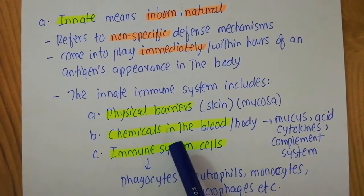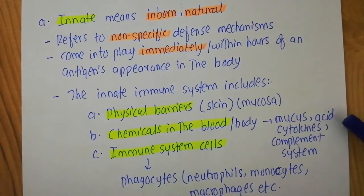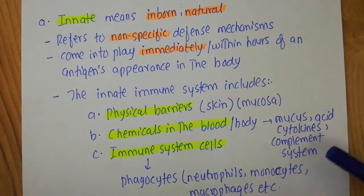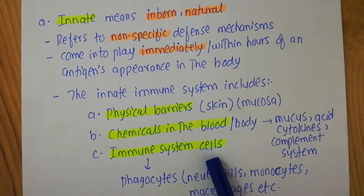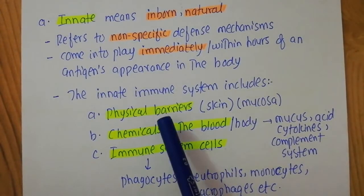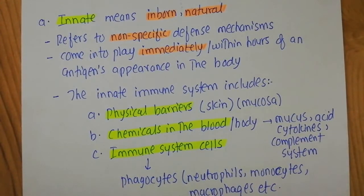The innate immune system also includes different chemicals in your blood and body, for example mucus, stomach acid, cytokines, and the complement system, which will be discussed in the next video. The third important component includes immune cells, especially phagocyte cells such as neutrophils, monocytes, and macrophages. All of these — physical barriers, chemicals, and immune cells like phagocytes — are non-specific in their nature, and therefore included in the innate immune system.